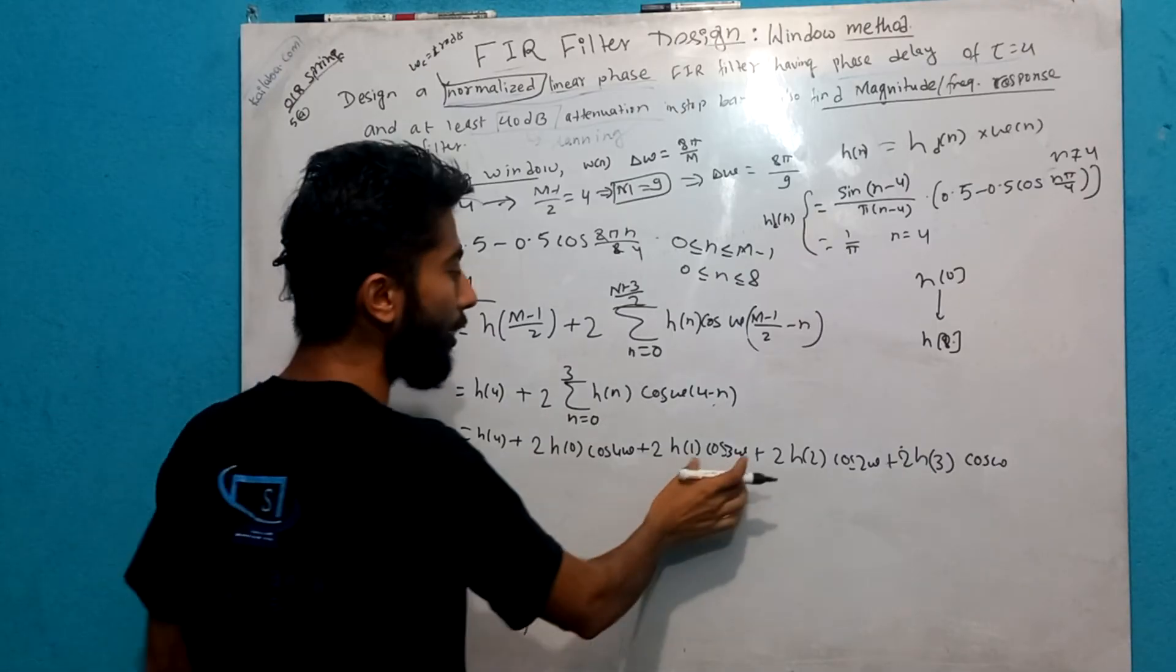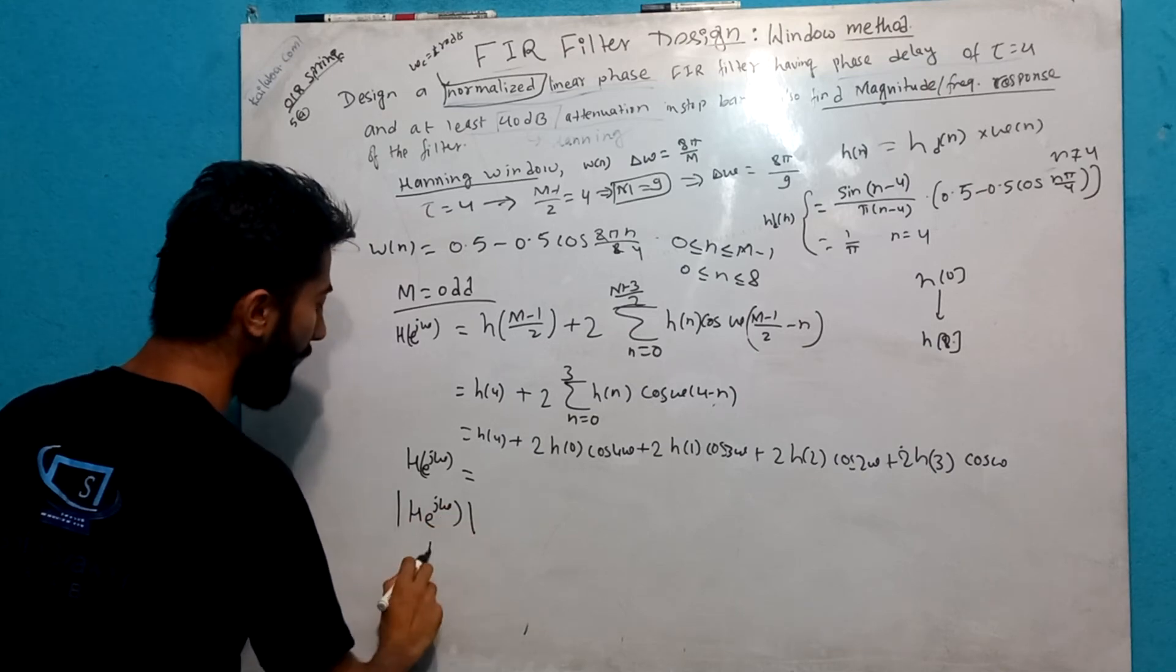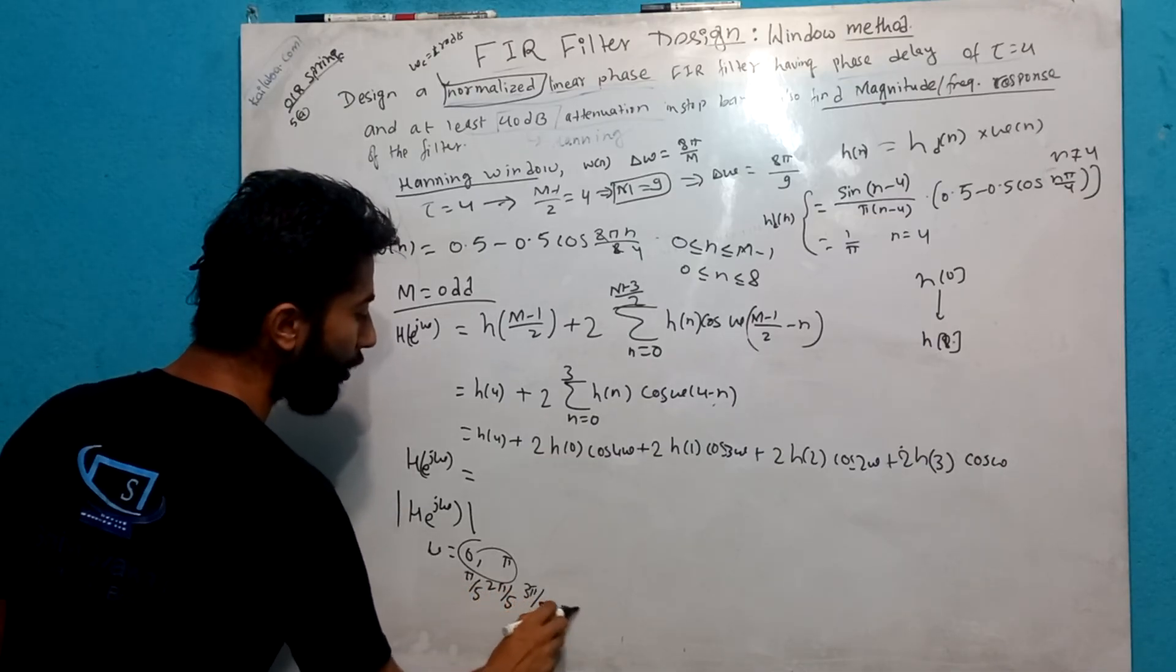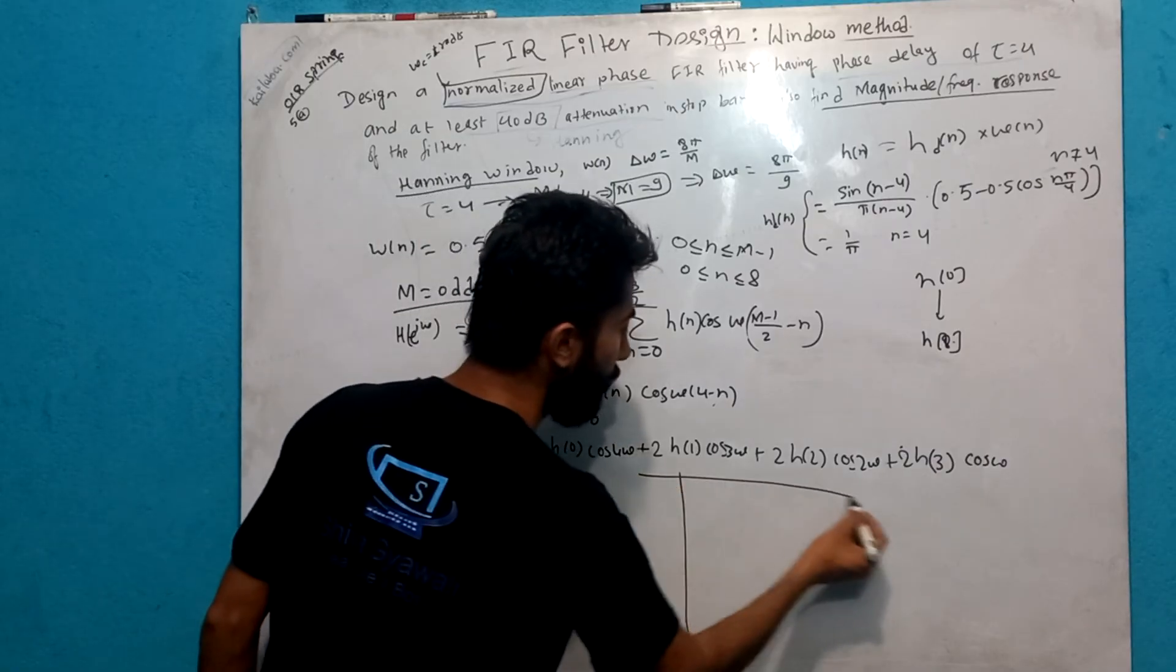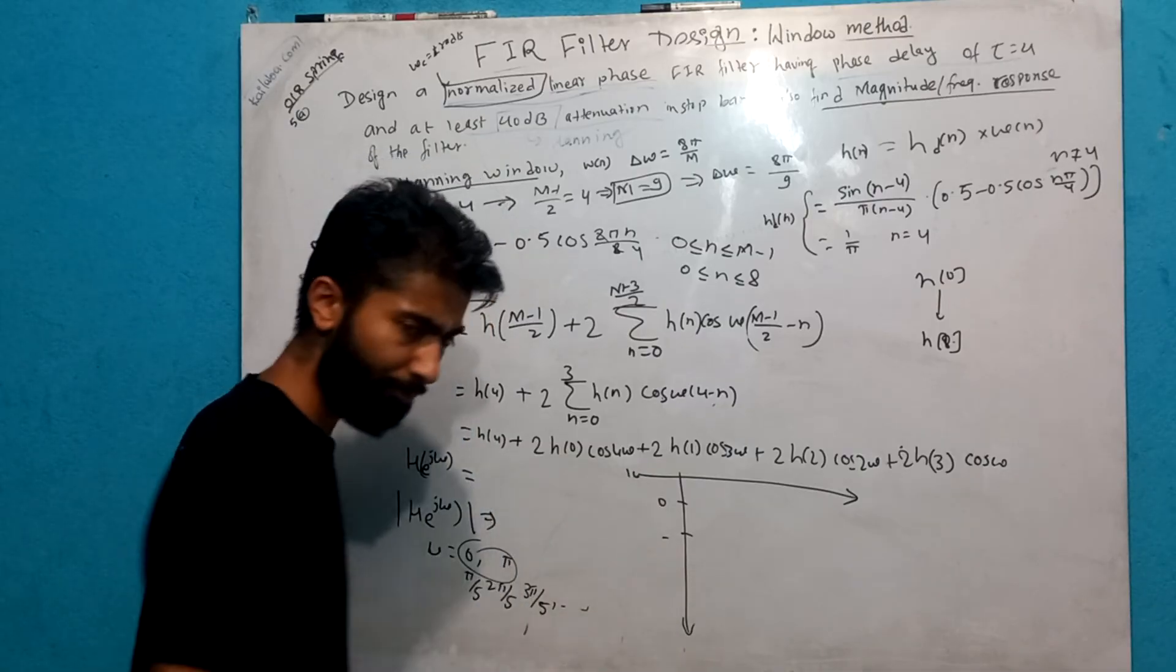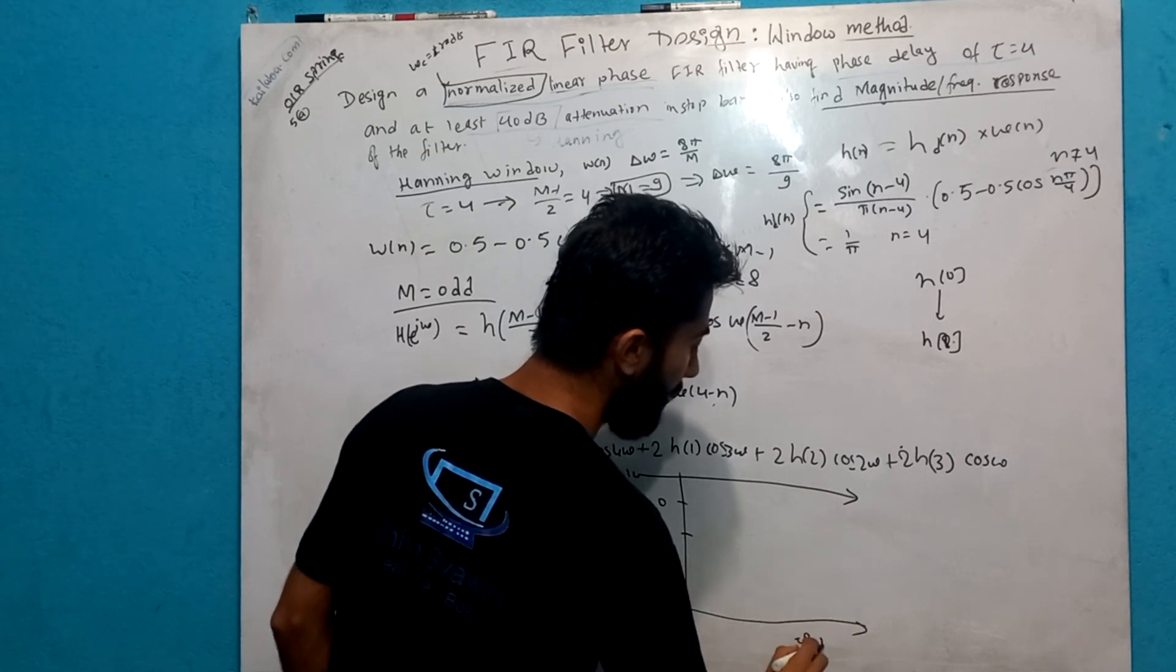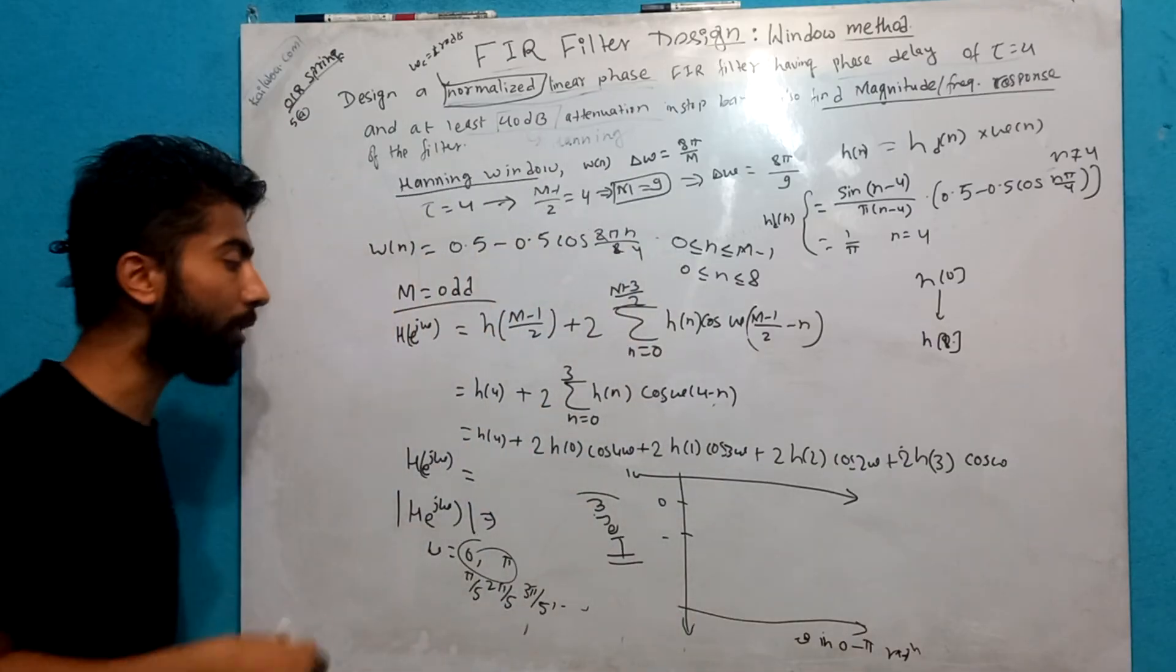We can get magnitude of H of e to the power j omega for different values of omega. Omega values from 0 to pi, we can take sample points like pi by 5, 2 pi by 5, 3 pi by 5. For these values, we calculate H of e to the power j omega. Then you can plot it. Suppose this is 0, this is 10, this is minus. You put the magnitude H of e to the power j omega on the vertical axis and omega from 0 to pi radians on the horizontal axis.